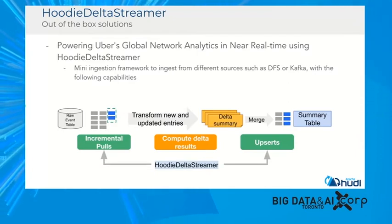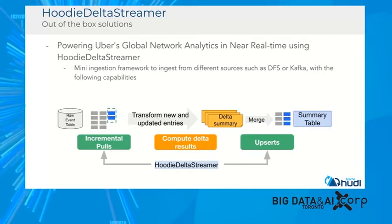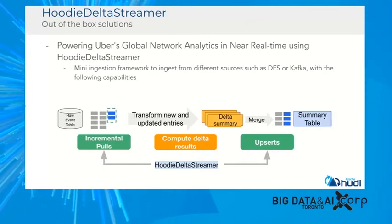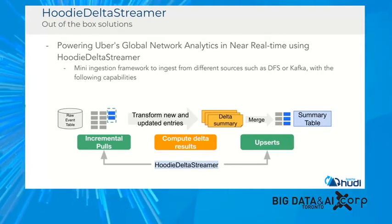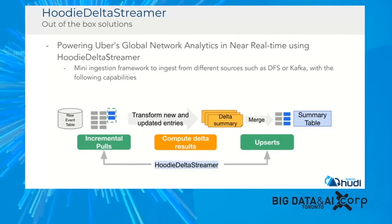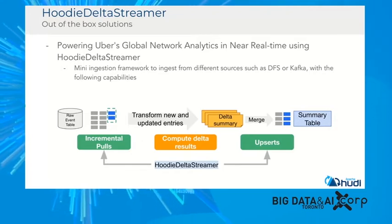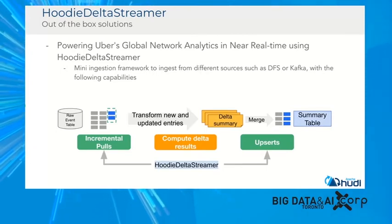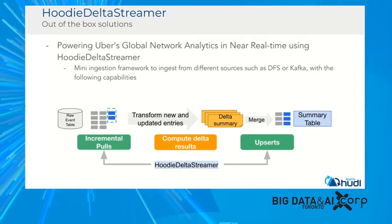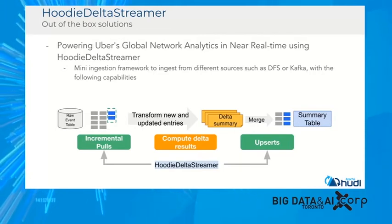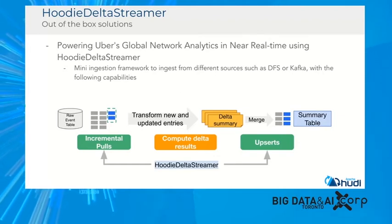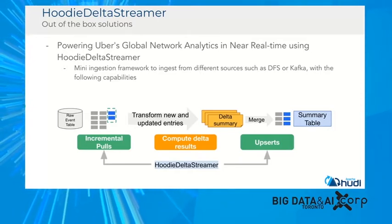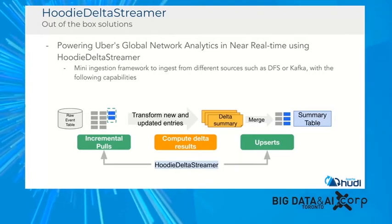The Hudi Delta Streamer is an out-of-box solution. One example use case is Uber's global network analytics team, which monitors what happens with the network when the Uber app is running — across 4G, LTE, 2G, and other networks in different countries. The team ingests raw network events and uses Hudi Delta Streamer to incrementally pull what changed, transform these entries by computing delta results, merge them with what was present before, and finally upsert into a summary table. Because data cardinality can be very large, they use TDigest to reduce cardinality and produce an estimation of how the network is performing.